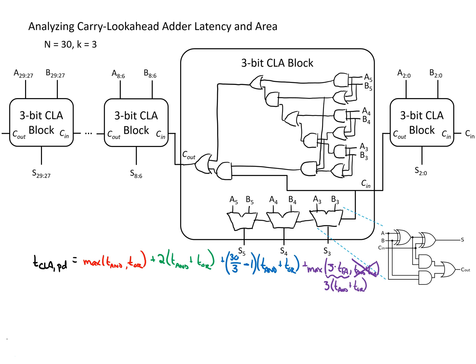That takes care of the propagation delay for the carry lookahead adder. Another element of interest is the contamination delay or the shortest path. Here we're looking for the shortest path, and if we look at an individual full adder we can see that an output could change as quickly as when A and B change and go through an AND gate and an OR gate. So the shortest path would be through a single AND gate and a single OR gate, and that would be the contamination delay.